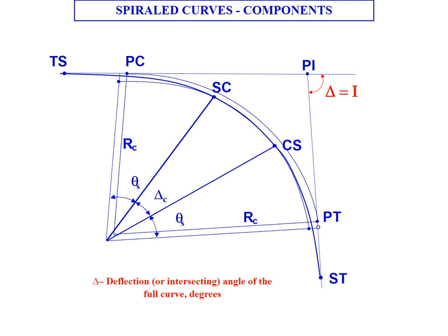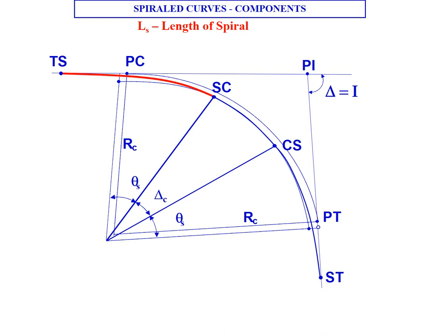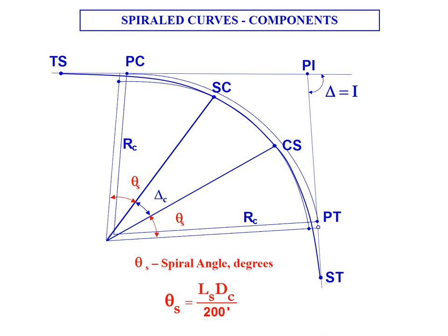Delta is the deflection or intersecting angle of the full curve. L sub s is the length of spiral, so that's the distance along that spiral from the TS to the SC point and also it's the same if it's a symmetric curve from the CS to the ST.